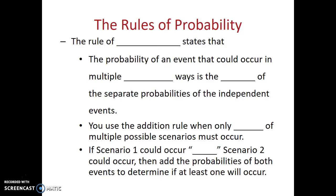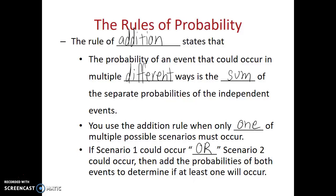The next rule of probability is known as the rule of addition. The rule of addition states that the probability of an event that could occur in multiple different ways is going to be the sum of the separate probabilities of the independent events. When you can get the same result in multiple different ways, you add the probabilities of those different ways together. You use the addition rule when only one of multiple possible scenarios must occur — if you could get your result through Scenario 1 or Scenario 2, then add the probabilities of both together.